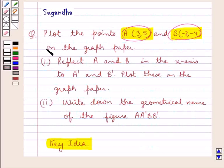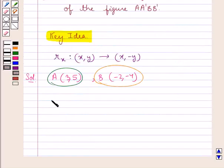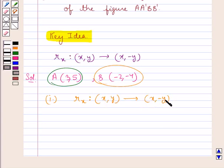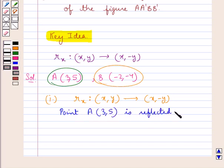So we have plotted the points A and B. Next, it is given in the question that we are supposed to reflect the points A and B in the x-axis to A' and B'. We know that reflection in the x-axis is denoted by Rx, in which the coordinates (x, y) go to (x, -y). Point A with coordinates (3, 5) is reflected in the x-axis to point A'.